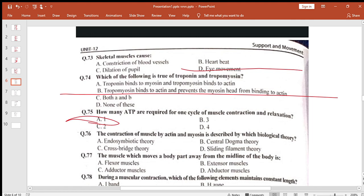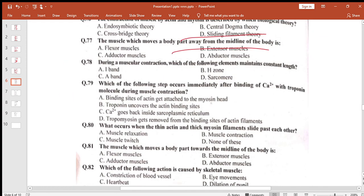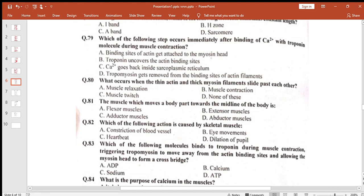How many ATP are required for one cycle? One ATP. The contraction of muscle by actin and myosin is described by which biological theory? Sliding filament theory. The muscle which moves a body part away from the midline? Extensor muscle.